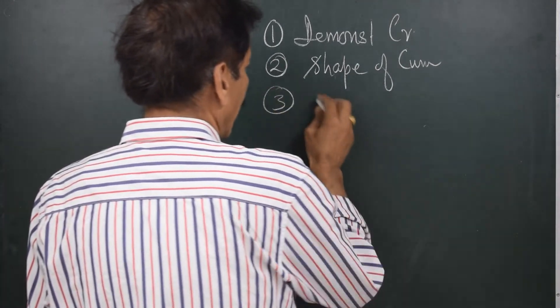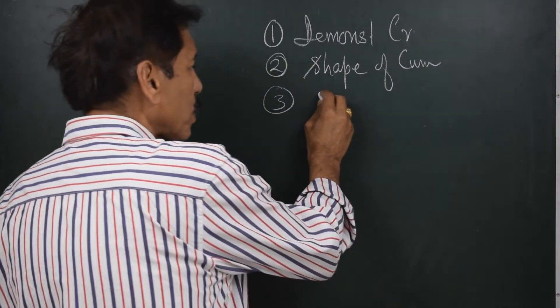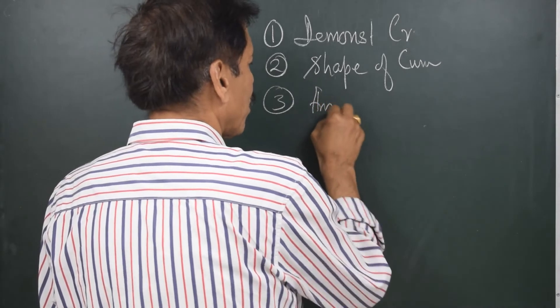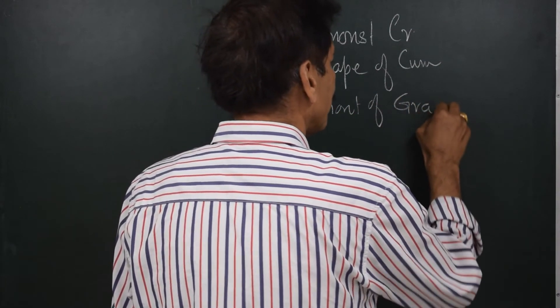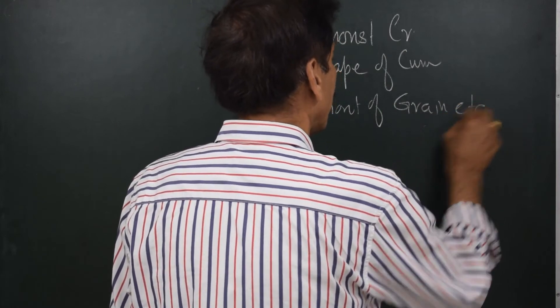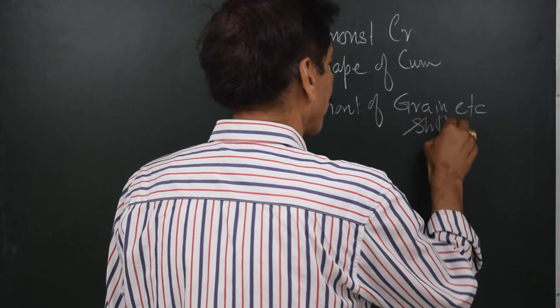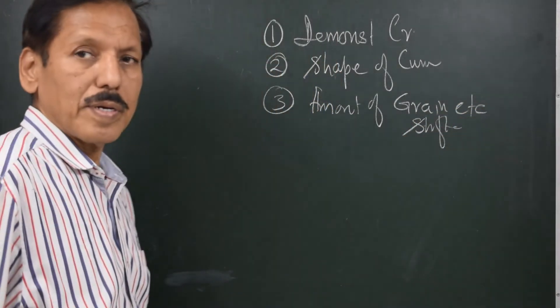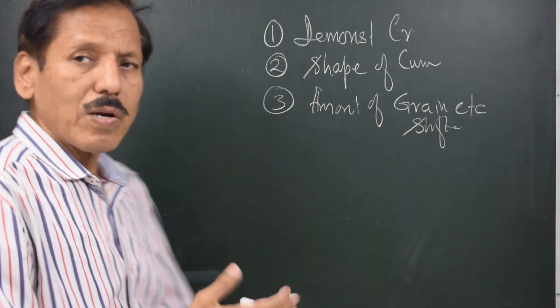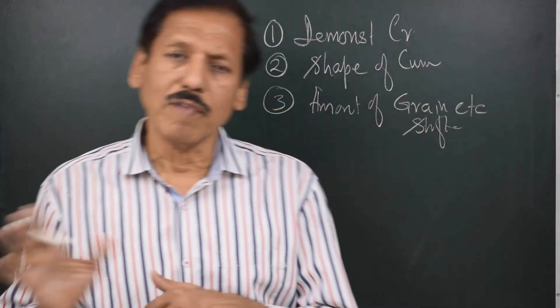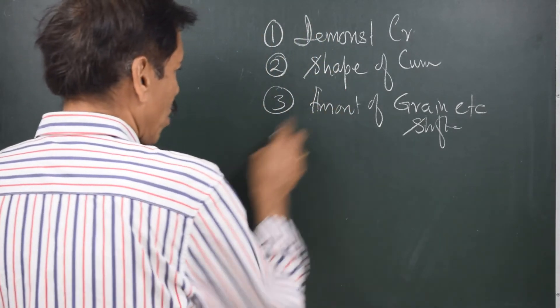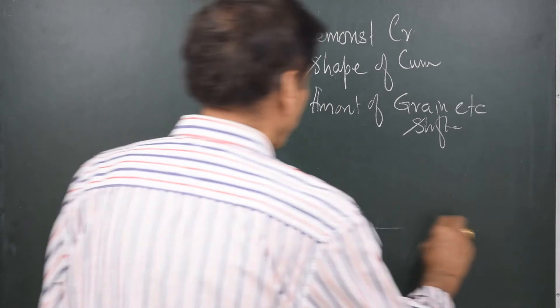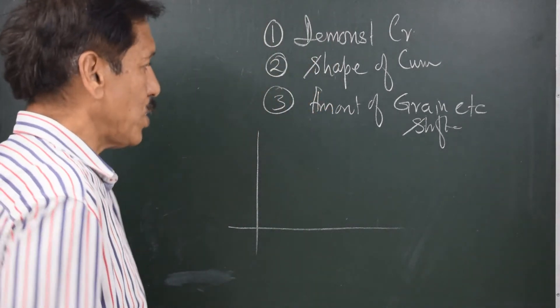Third is we can find out the amount of say grain etc shifted. Then we can also find out what is the effect of transverse and vertical shift of the cargo. Now let us talk about this third point, amount of grain shift.